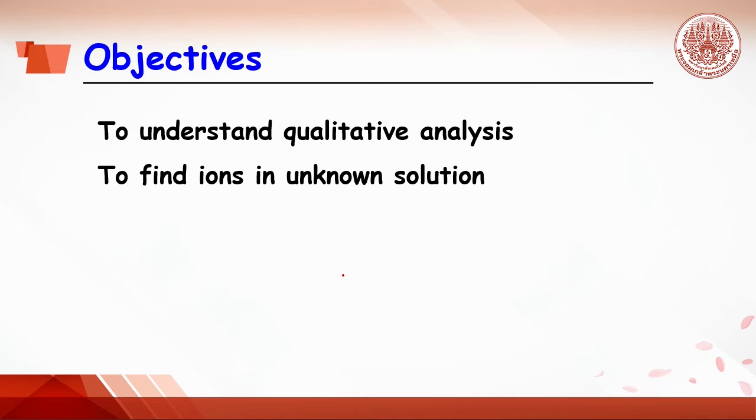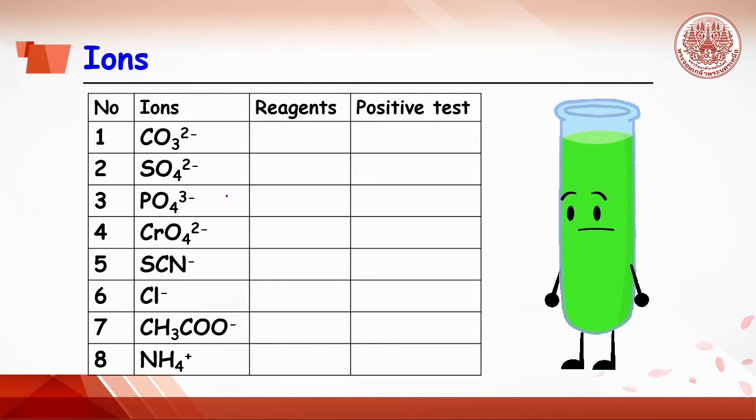The objectives for the experiment today are to understand qualitative analysis and to find ions in an unknown solution. Each unknown sample in the test tube contains three ions. You need to find out what ions are. The principle is each ion will have its own reagent and get a positive test.